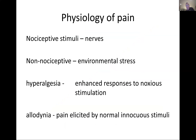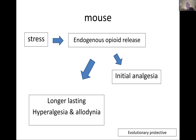You get nociceptive stimulation — stimulate a nerve, you get pain. Then you have non-nociceptive stimuli, which are environmental stress factors. Key terms: nociceptive nerve pain, non-nociceptive environmental stress, hyperalgesia — an enhanced, over-response to a stimulation — and allodynia, which is pain elicited by normally non-nociceptive stimuli.